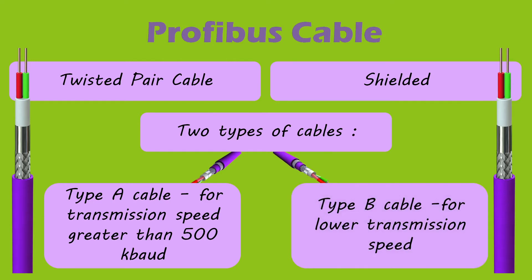Profibus uses a twisted pair cable with shielding, though shielding is sometimes not provided in application-specific cases. Usually, Profibus cables in use are shielded. There are two categories of cables: Type A, used when the transmission speed is greater than 500 kbps, and Type B, used for short distances and low baud rates.